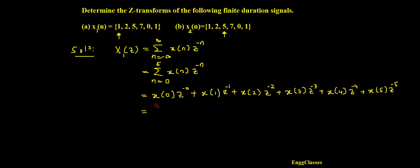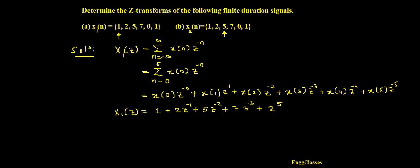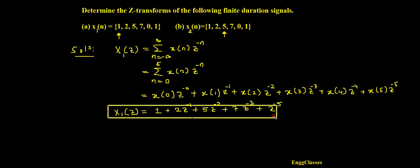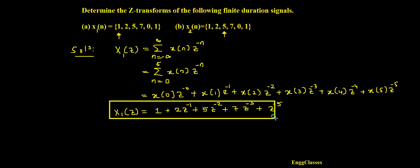Now substituting the amplitudes: x(0) is 1, so we get 1. x(1) is 2, giving 2z to the power minus 1. x(2) is 5, giving 5z to the power minus 2. x(3) is 7, giving 7z to the power minus 3. x(4) is 0, so that term vanishes. x(5) is 1, giving z to the power minus 5. So X1(z) equals 1 plus 2z⁻¹ plus 5z⁻² plus 7z⁻³ plus z⁻⁵.